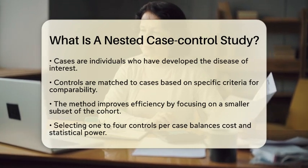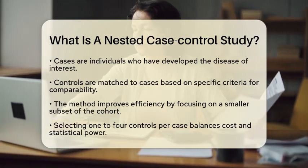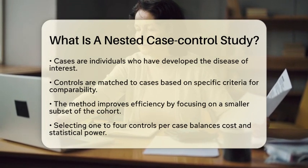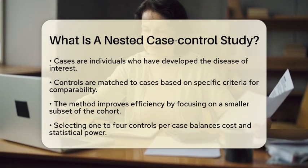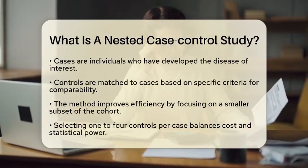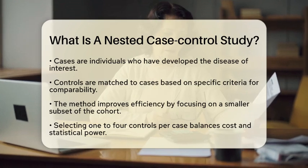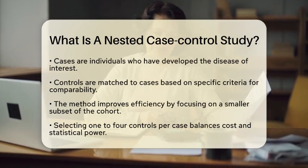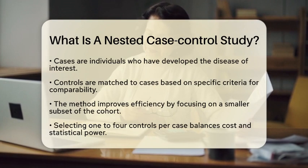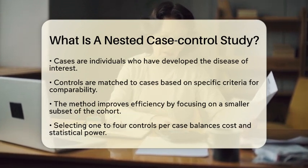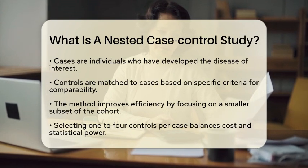One of the main advantages of this design is its efficiency. Instead of collecting data from the entire cohort, researchers focus on a smaller subset. This approach reduces both the cost and effort required for data collection and analysis. Generally, researchers select one to two controls for each case, which helps maintain a good balance between cost and statistical power.